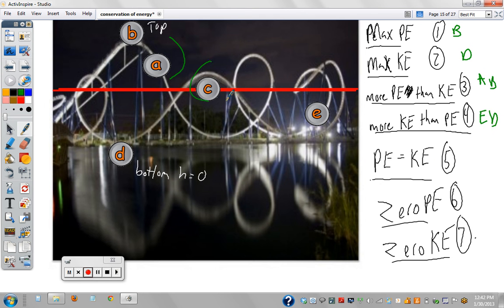Potential energy and kinetic energy are equal in the middle. There's zero potential energy at the bottom, where there's zero height. And zero kinetic energy at the top, where there's zero velocity.